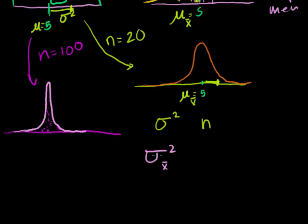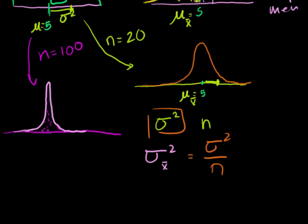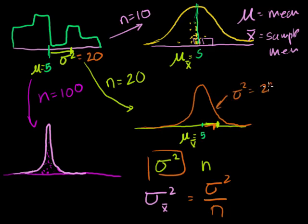It turns out that the variance of your sampling distribution of your sample mean is equal to the variance of your original distribution divided by n. That's all it is. So if the original distribution has a variance of 20 — I'm just making that number up — and your n is 20, then the variance of your sampling distribution of the sample mean is 20 divided by 20, which equals 1. This is the variance of your original probability distribution, and this is your n.